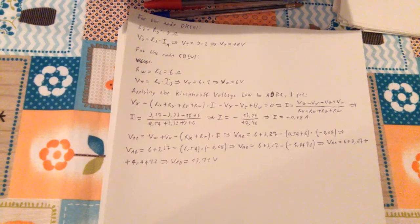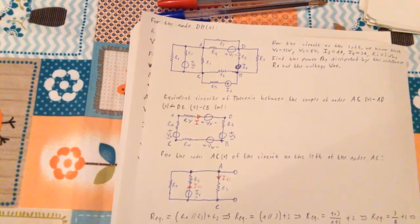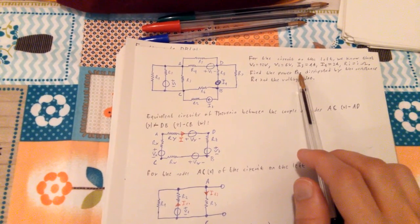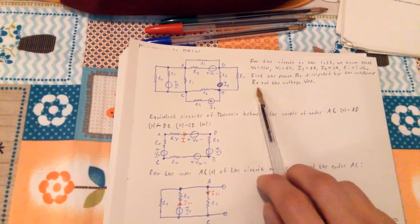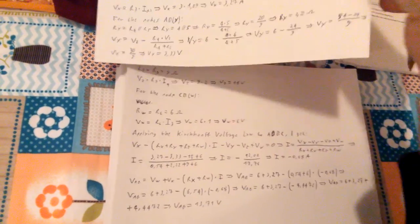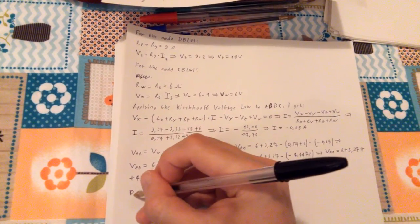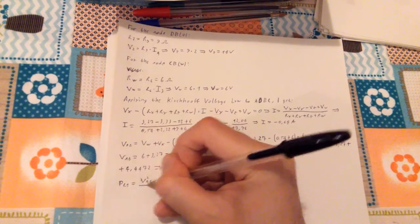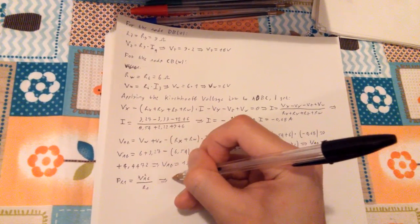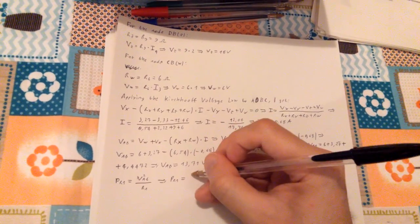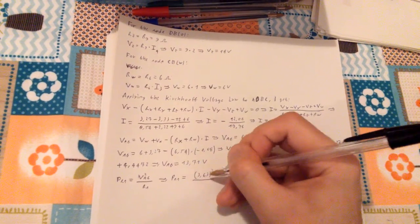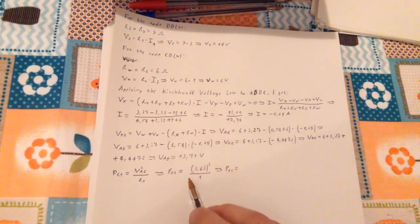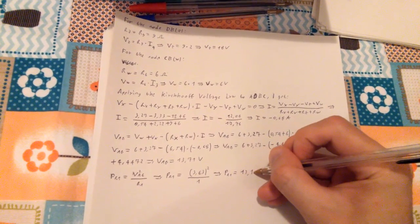We have found VAB. Now everything that is left is the power PR1 dissipated by resistance R1. PR1 is given by VAC squared over R1. PR1 = 3.63² / 1 = 3.63² = 13.17 watts.